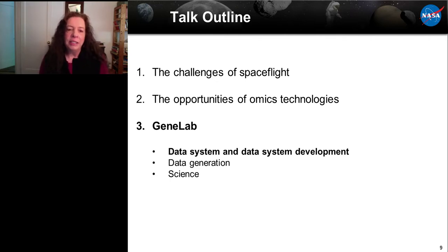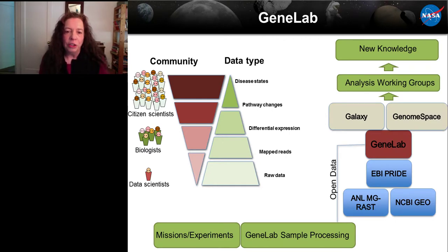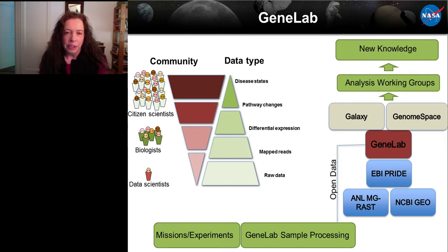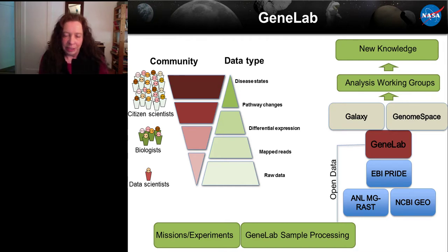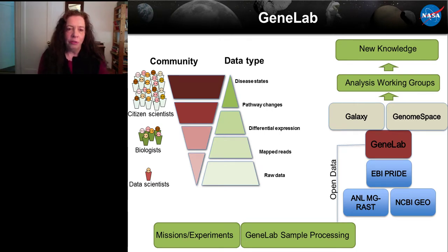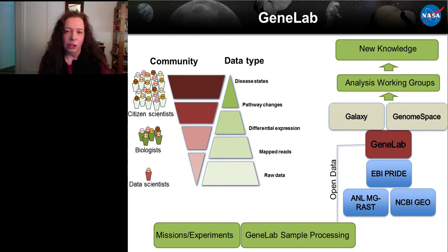GeneLab is a data system with a number of different components. Right now, GeneLab hosts primarily raw data — gene sequences, RNA sequences, proteome reads, metabolomic mass spectra, etc. Those data are currently interpretable by data scientists. One of the goals of GeneLab is to democratize that data so it can be interpreted by biologists who are not necessarily bioinformaticians, and even by citizen scientists who are interested in understanding what happens in space to our genes.